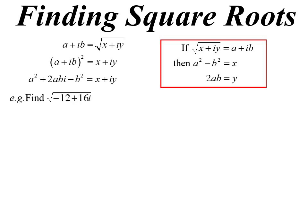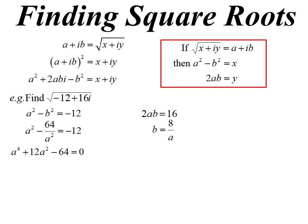To find the square root of minus 12 plus 16i: a squared minus b squared equals negative 12, and 2ab equals 16. Making b the subject gives b equals 8 on a. Substituting into the first equation creates a quartic, but we treat it like a quadratic: a to the power of 4 plus 12a squared minus 64. Factorising gives a squared equals 4 or a squared equals negative 16, and we have two possibilities.